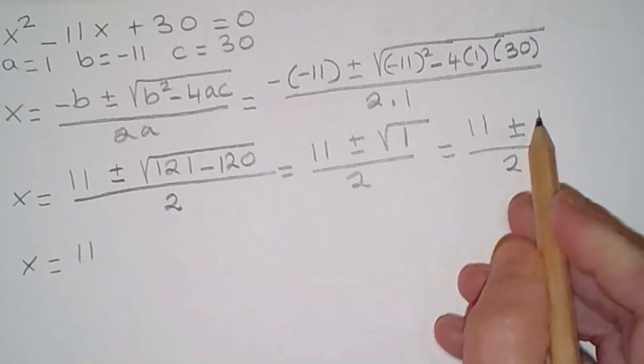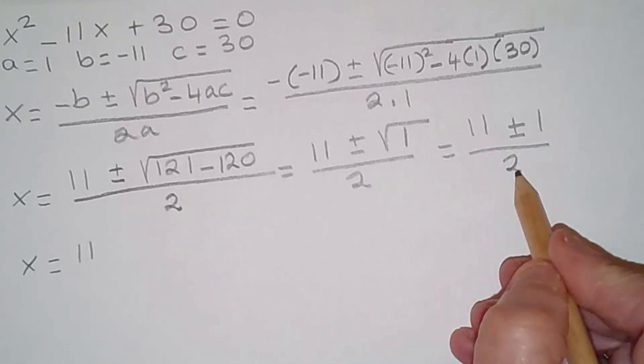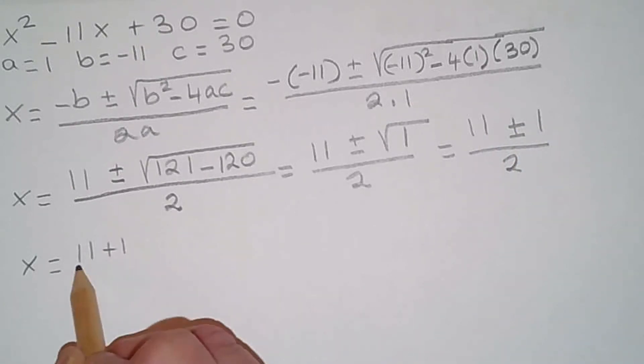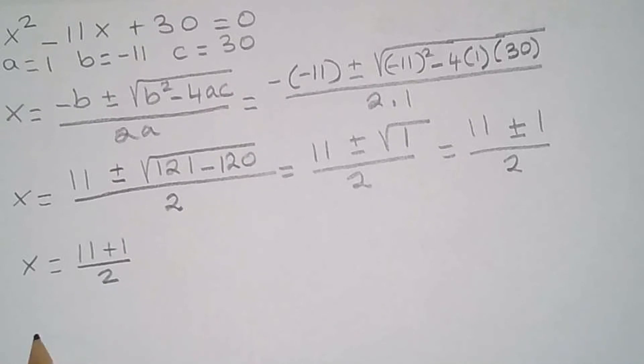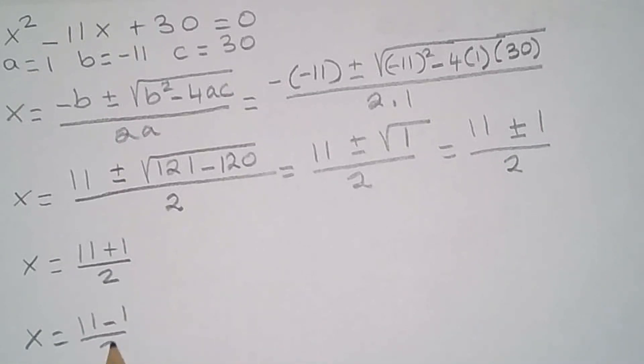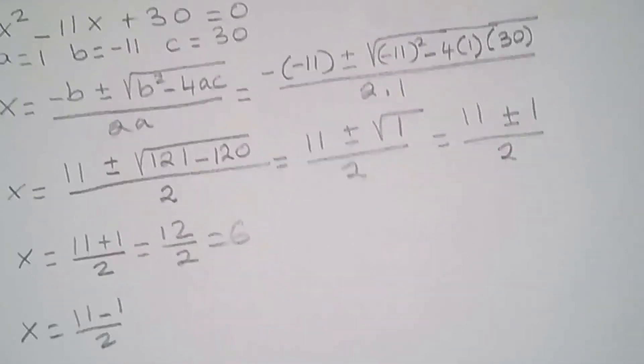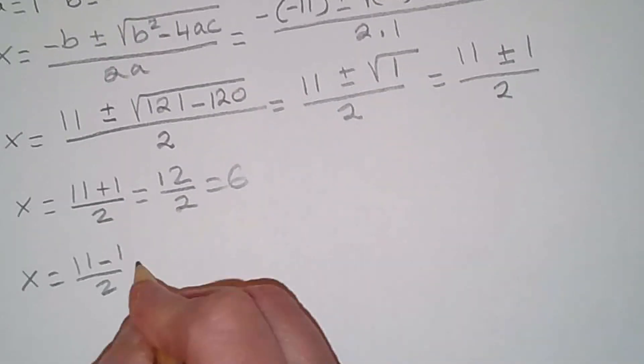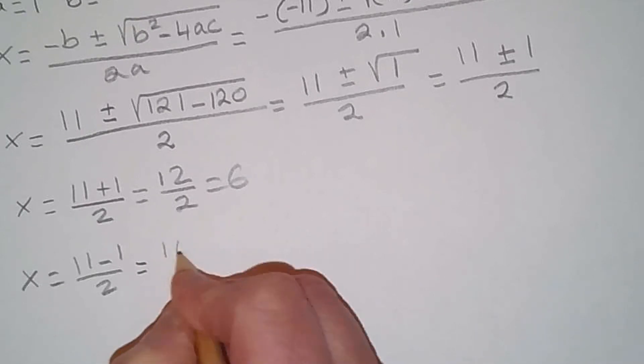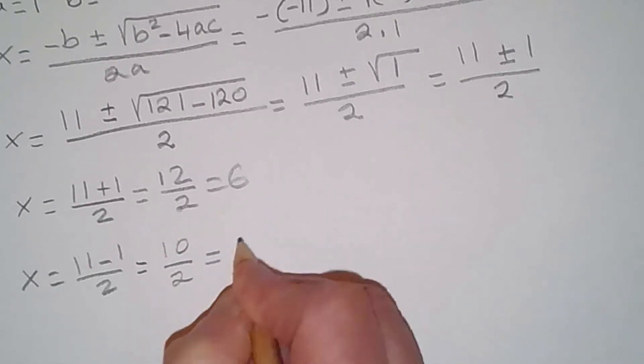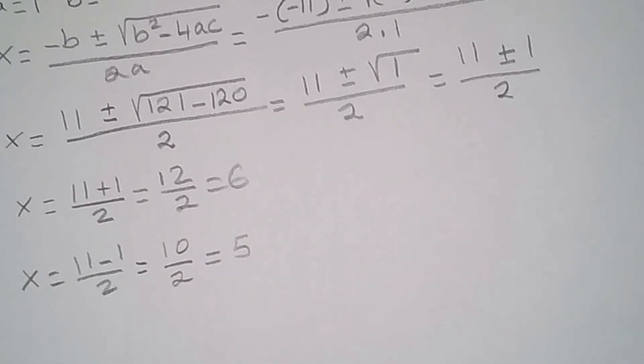x equals 11 plus 1 divided by 2, and the other solution is 11 minus 1 divided by 2. So that gives me 12 divided by 2 which is 6, and here 11 minus 1, that's 10 divided by 2 which is 5. So the solutions are x equals 6 and x equals 5.